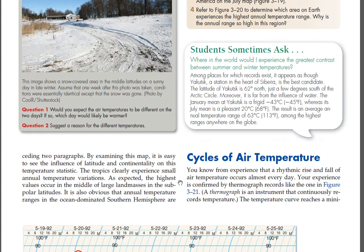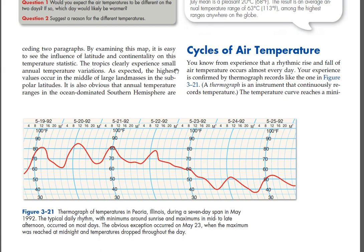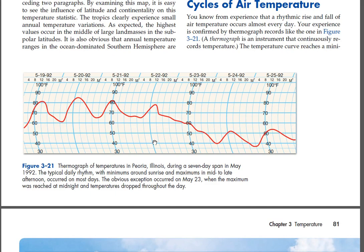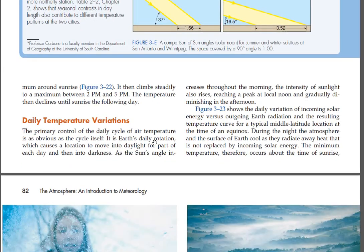Cycles of air temperature. You know from experience that a rhythmic rise and fall of air temperature occurs almost every day. Your experience is confirmed by thermograph records like the one in Figure 3-21. A thermograph is an instrument that continuously records temperature. The temperature curve reaches a minimum around sunrise (Figure 3-22), then climbs steadily to a maximum between 2 PM and 5 PM, and then declines until sunrise the following day.